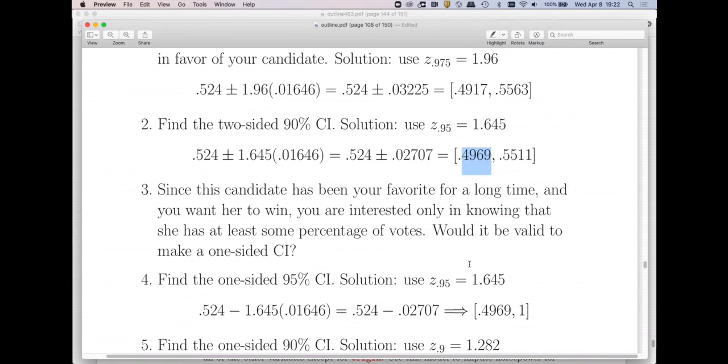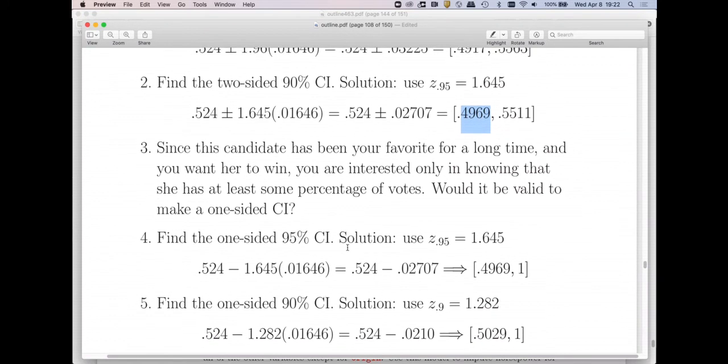Now, if you wanted a one-sided 90% confidence interval, we'd have to use the Z value of 1.282, which would be the 90th percentile of a normal distribution. So you'd get a different interval. If you're wondering where I got that number 1.282, let's just go over to R for a second.